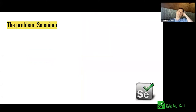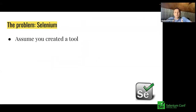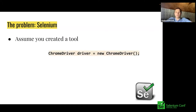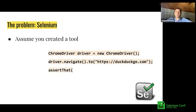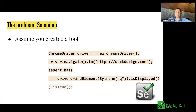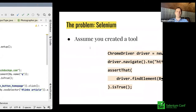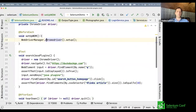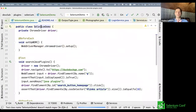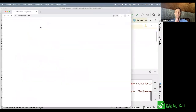Let's start from the problem. Imagine that you as a developer created some tool with a convenient API that users rely on. For example, if you created Selenium, you have an API like this. You can create a driver, call methods like navigate, click, check elements. Most of the time, everything is fine with this approach. I like to show the code and run it — it gives the feeling that I'm really doing things, not just reading theory.